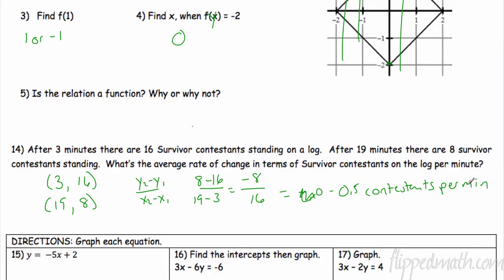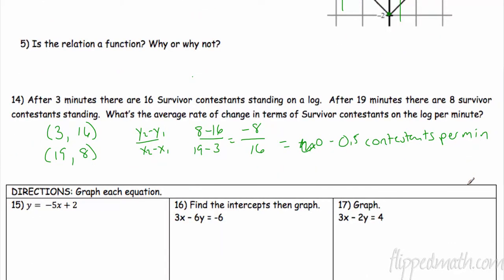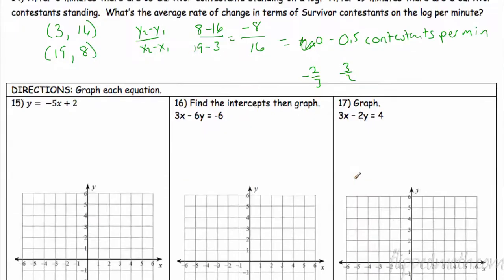Remember you need to have a label for any rate of change, so contestants per minute. A couple other things about slope that you want to remember: parallel slopes are always the same, perpendicular slopes are negative reciprocals. So negative two-thirds and three-halves, those will be parallel.